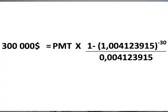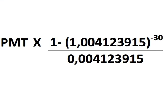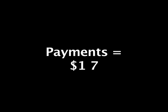Then you apply the formula given earlier. The present value is $300,000, the monthly rate is approximately 0.4123%, and the number of periods is 300. So the monthly payment will be $1,744.81.